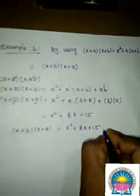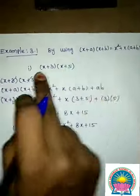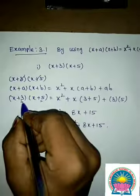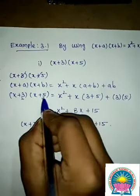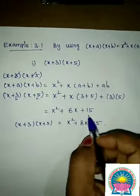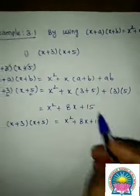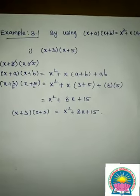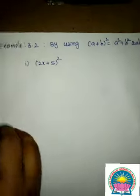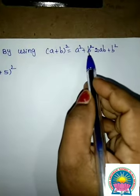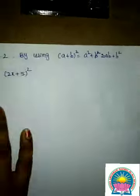Do you understand, children? We substitute the a and b values into the formula — a = 3, b = 5 — then add and multiply accordingly. Now, our second identity is: (a + b)² = a² + 2ab + b².